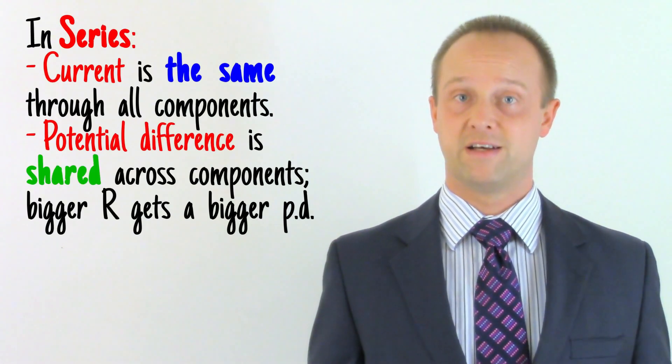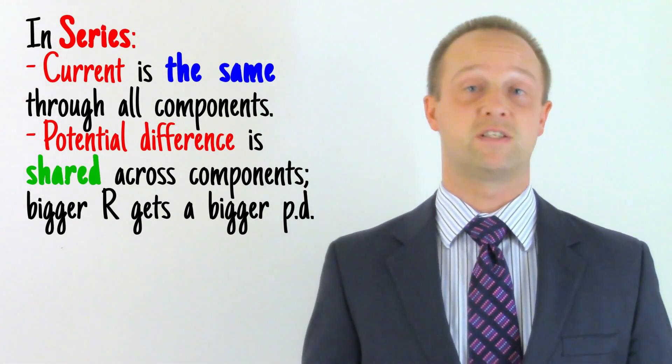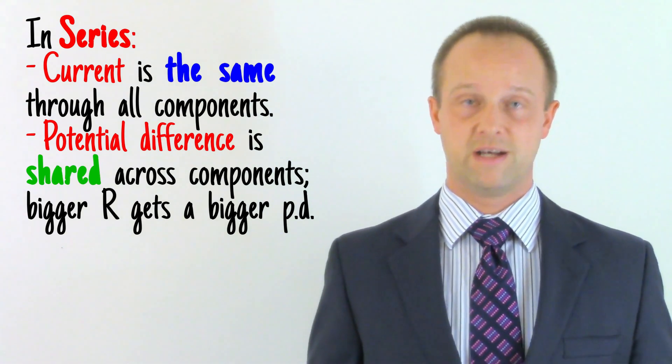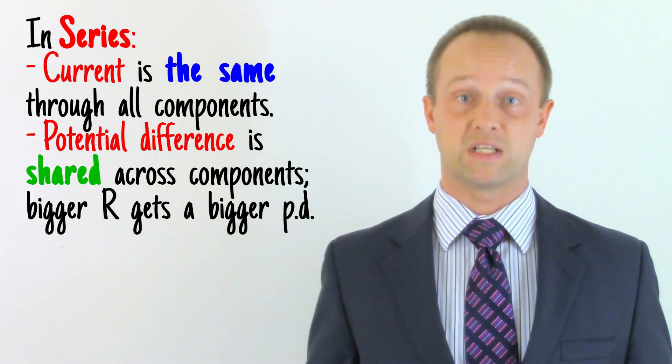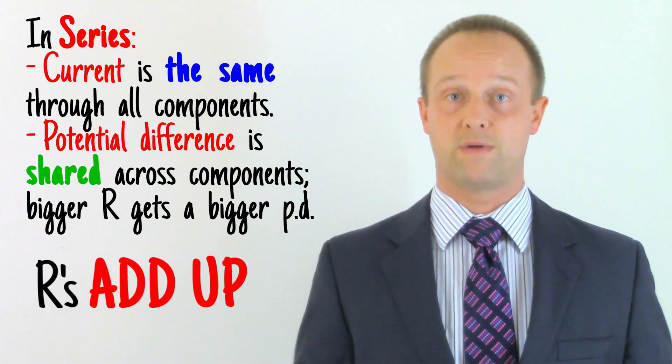All you really need to remember, though, is that in series, current is the same around the loop, potential difference is shared across the components, and the resistances of those components add up, giving us what we call an equivalent resistance.